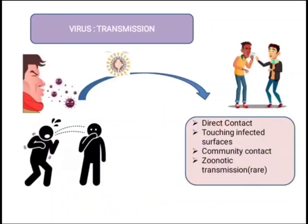How is the virus transmitted? Whenever an infected person coughs, the nasal droplets of the infected person carry the virus particle, and a normal person in close vicinity gets infected. So the virus spreads through direct contact and through community contact. This virus can also stay on different surfaces like metal, plastics, and other materials, though for how long it stays has not yet been scientifically proven.